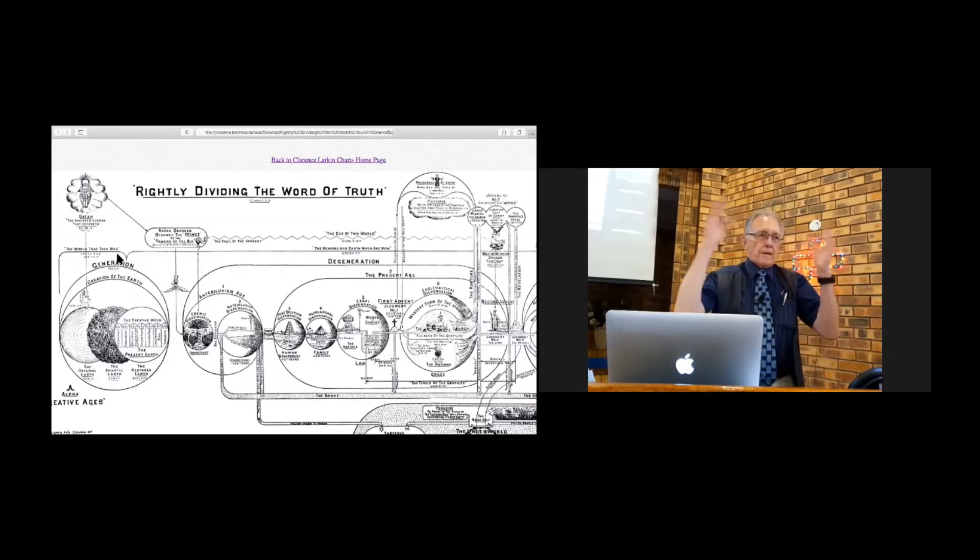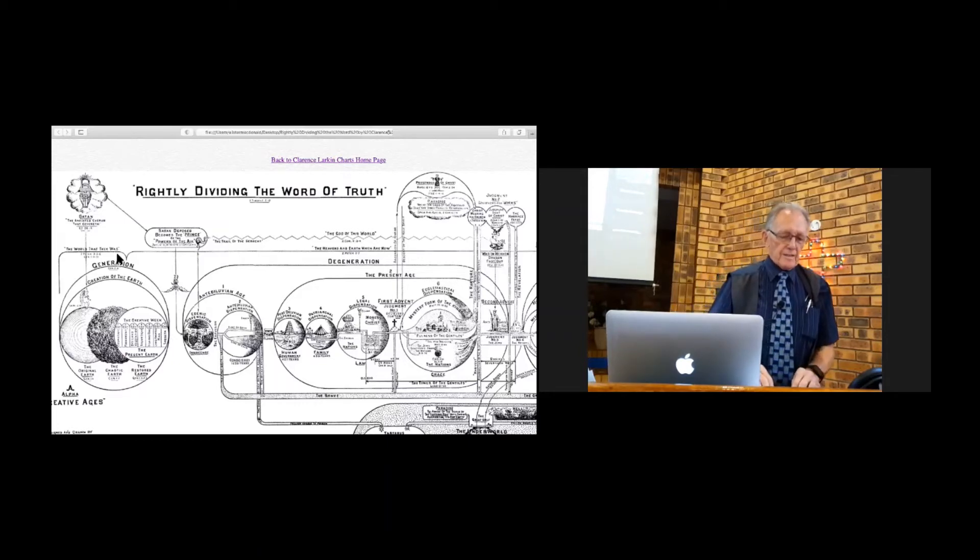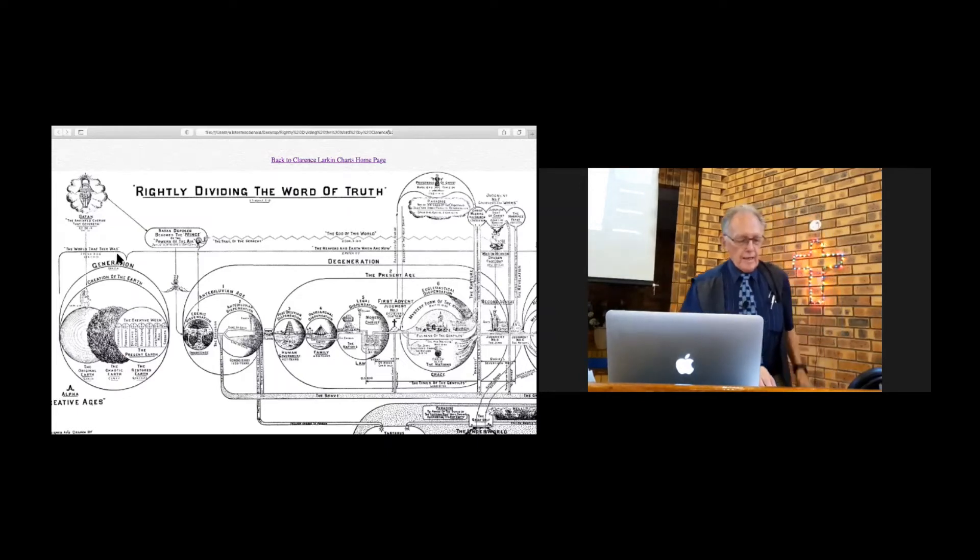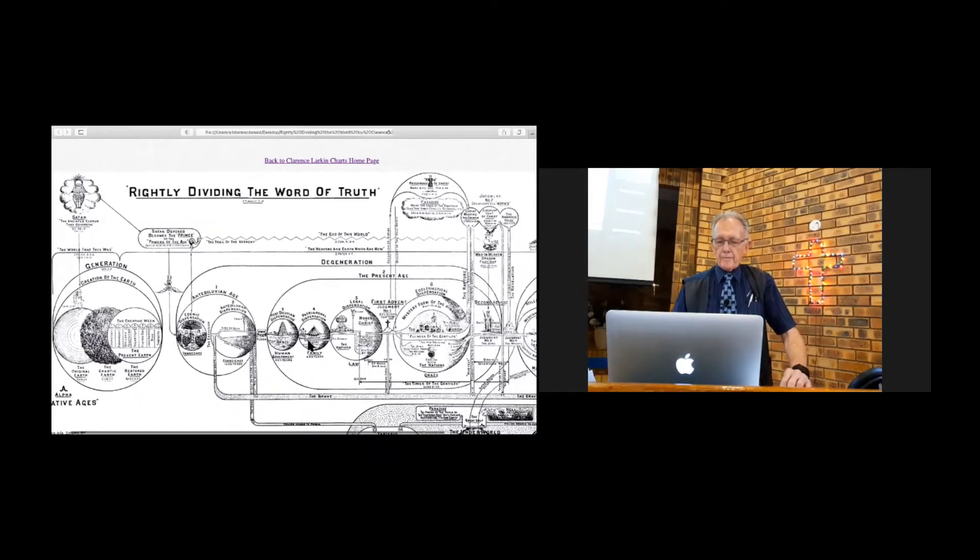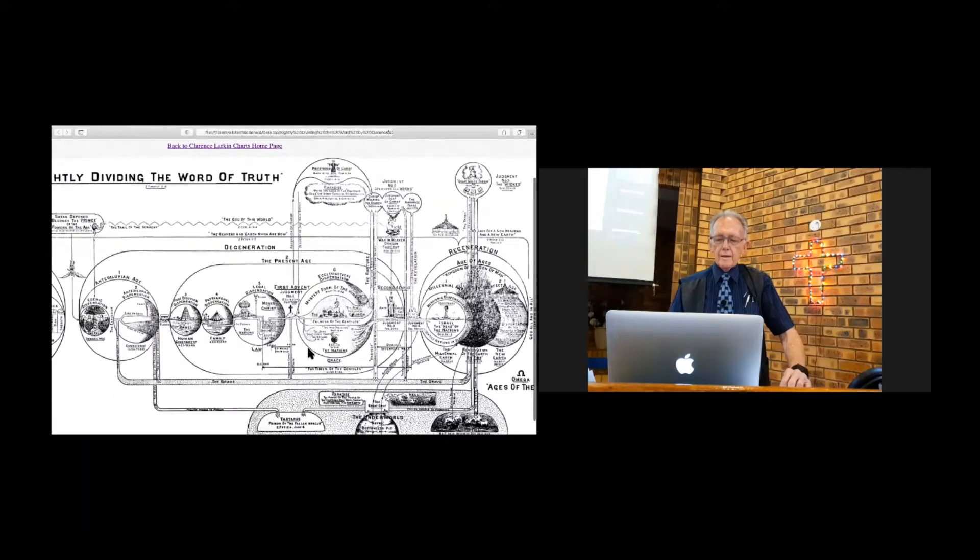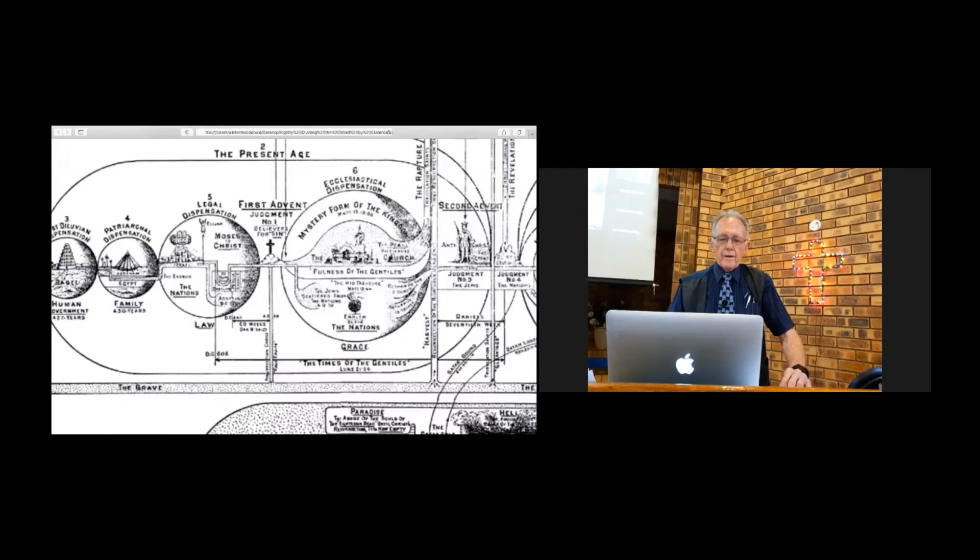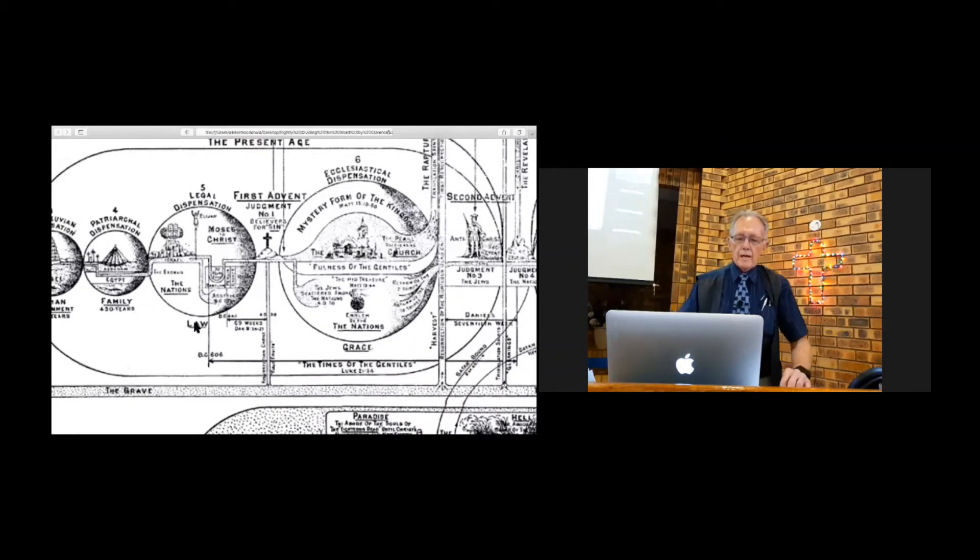Because this has to do with the Jewish people. As far as we are concerned, the price is paid, we are free, we have eternal life by his resurrection. But as far as the Jewish nation is concerned, that agenda is still not finished. They have to wait for that 70th week. So we've come to the end of the dispensation of law when Jesus arrived.